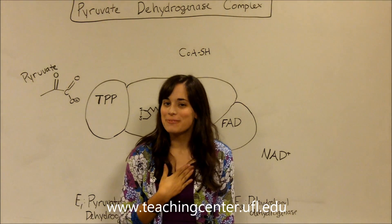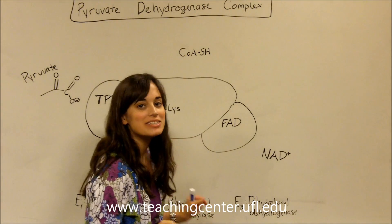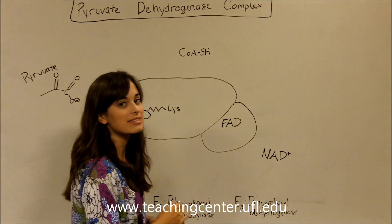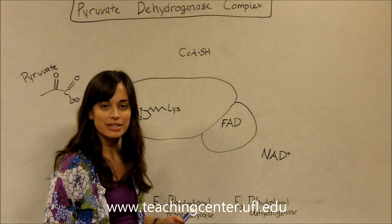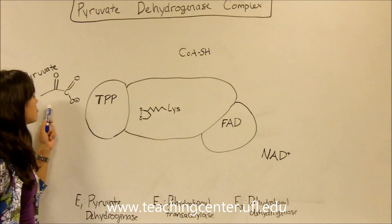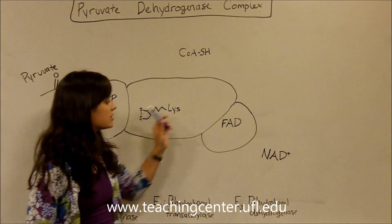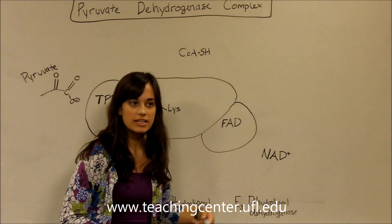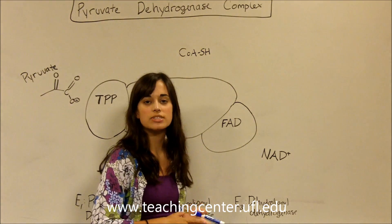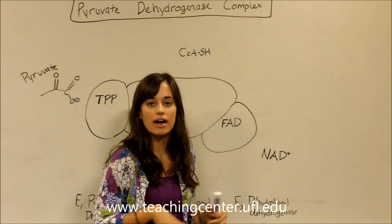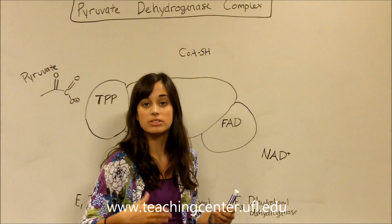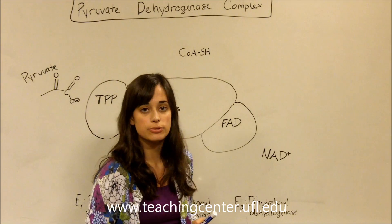Hi, my name is Stephanie Morton and I'm here today to talk about the pyruvate dehydrogenase complex. This is a very important mechanism. What it does is it takes pyruvate and makes acetyl-CoA and NADH, eliminating some CO2. Acetyl-CoA is what goes into the TCA cycle and allows for the full breakdown and utilization of all the energy from glucose.